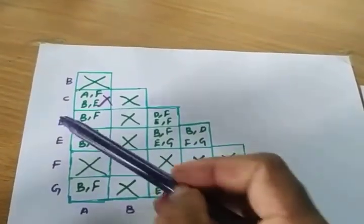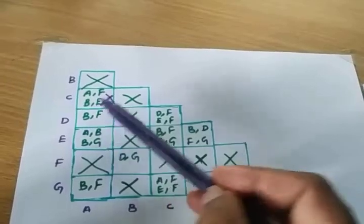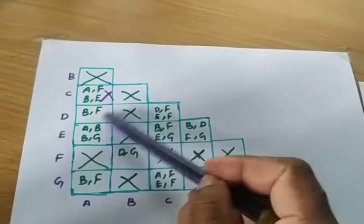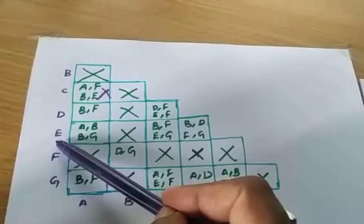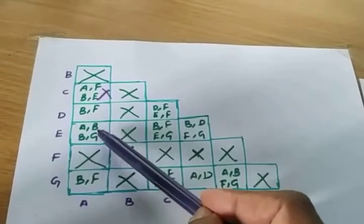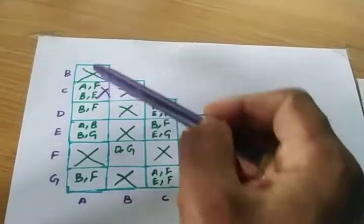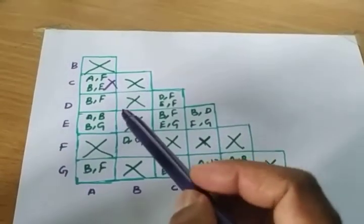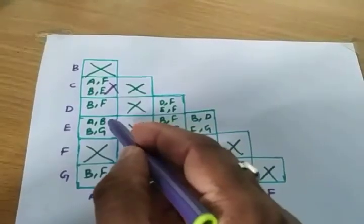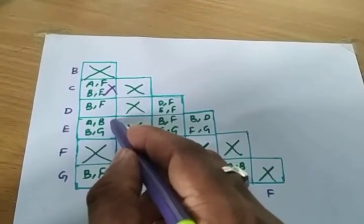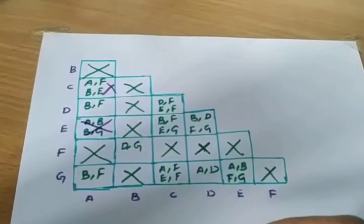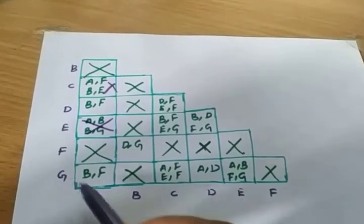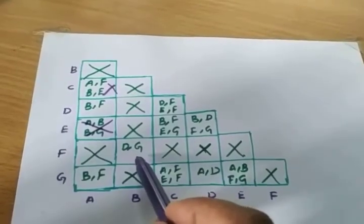Next check AD — check BF. BF has a cross, so that entry is already taken. Next is the AG column, which has entries AB and BG. AB is crossed, so we can put a cross mark here. Now for the AG column entry BF — BF has no cross mark, so it is taken.